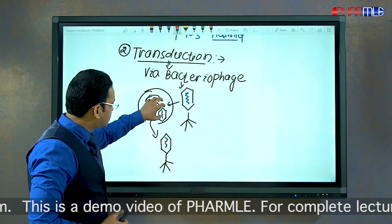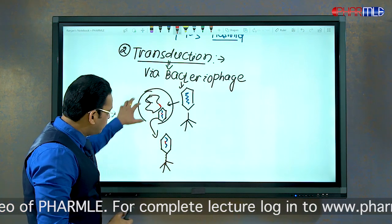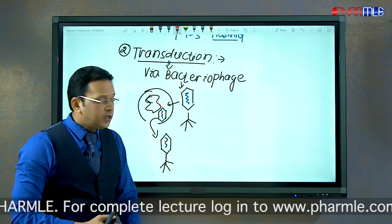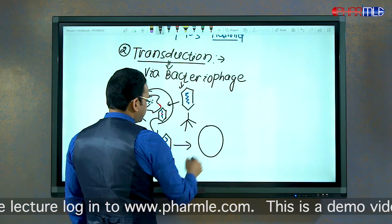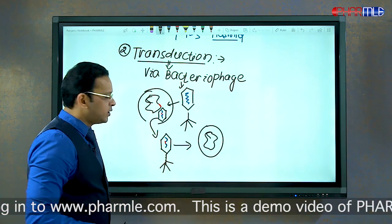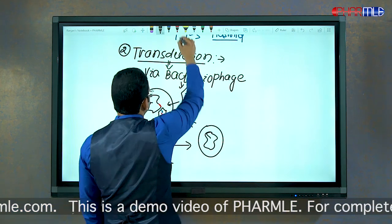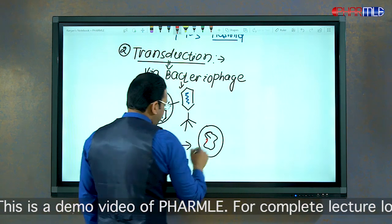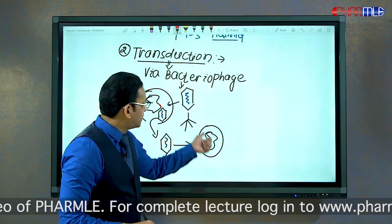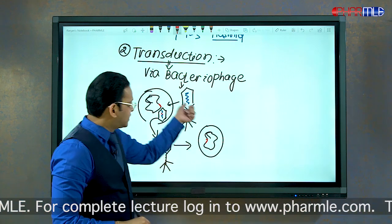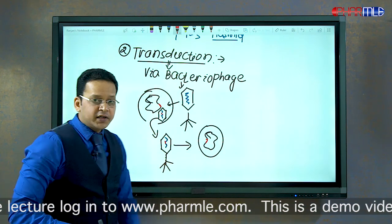Hundreds of bacteriophages carrying the gene of resistance are released. These will then infect another bacteria which is perfectly normal, without any genes of resistance. When the bacteriophage enters this new bacterium, it transfers the gene of resistance — acting as a carrier. This transfer of resistance via bacteriophage is called transduction.